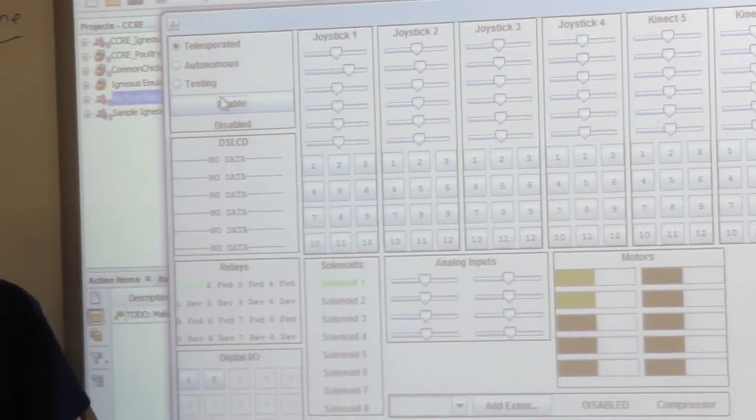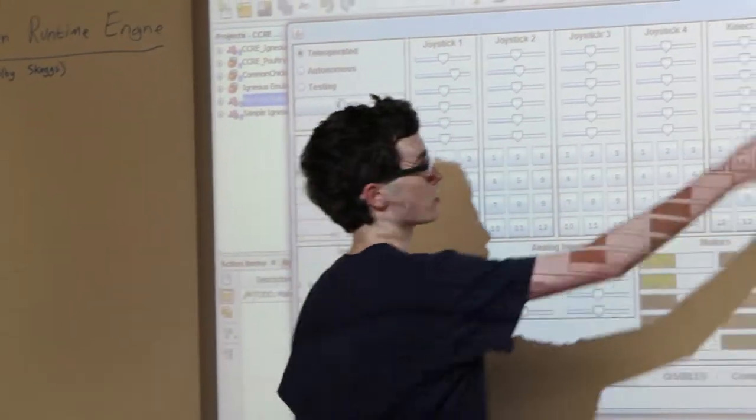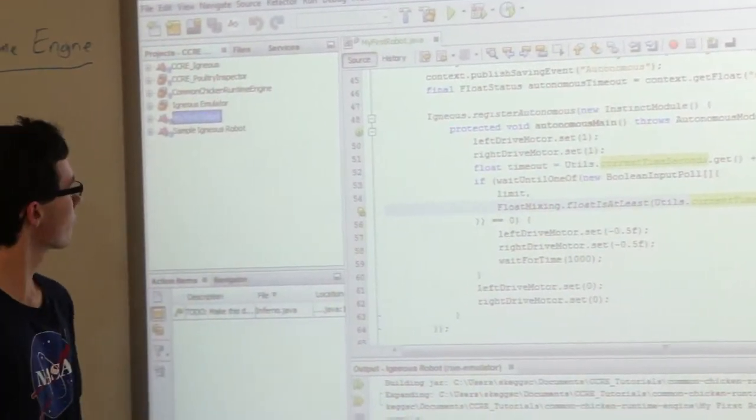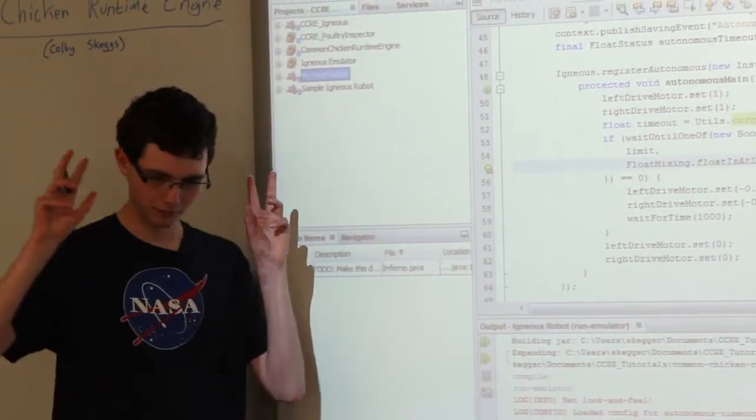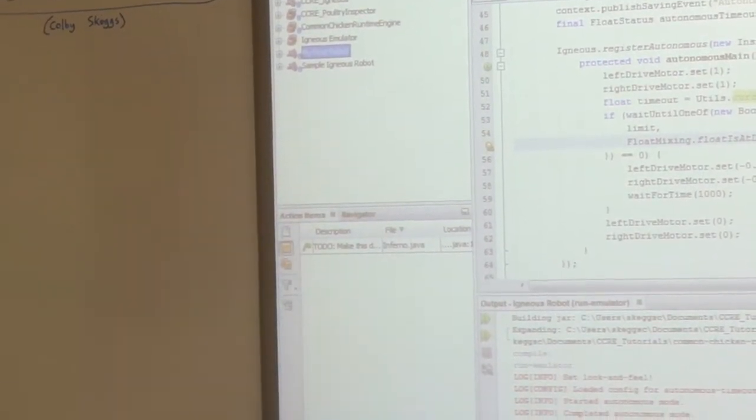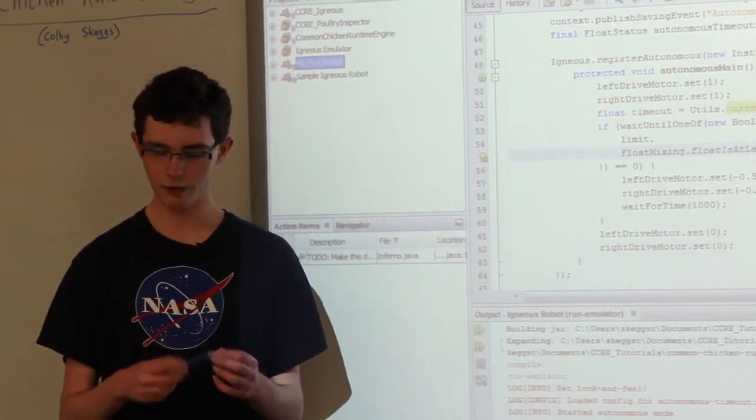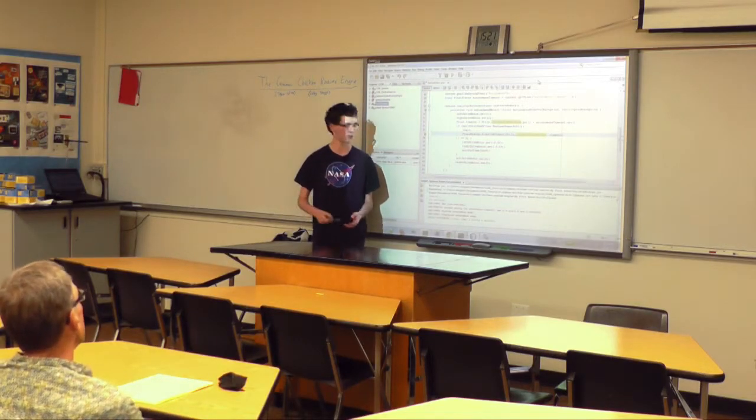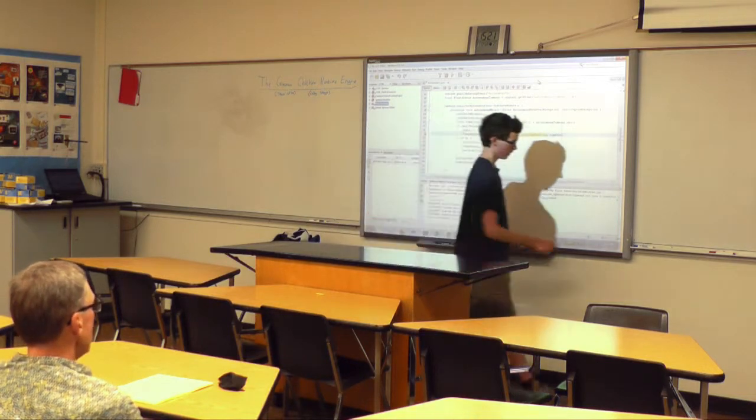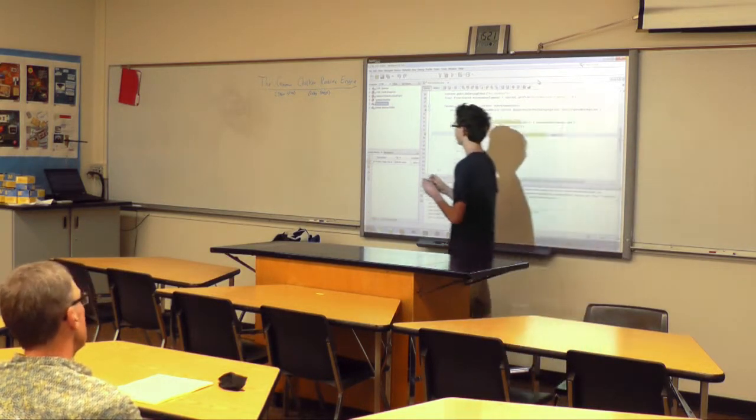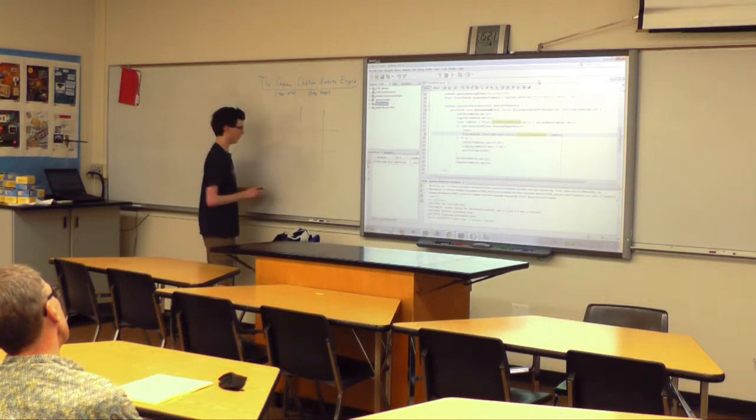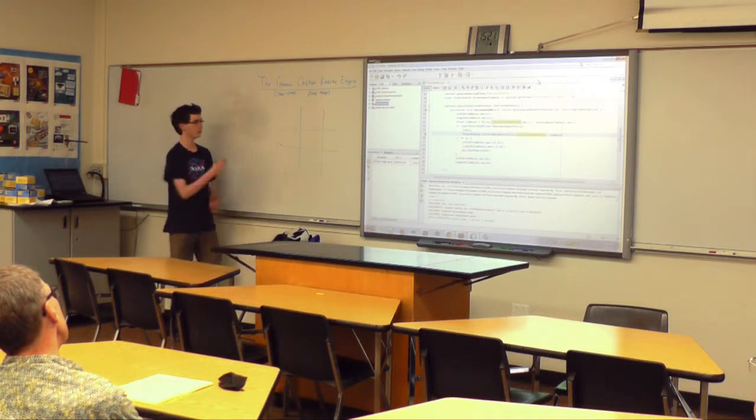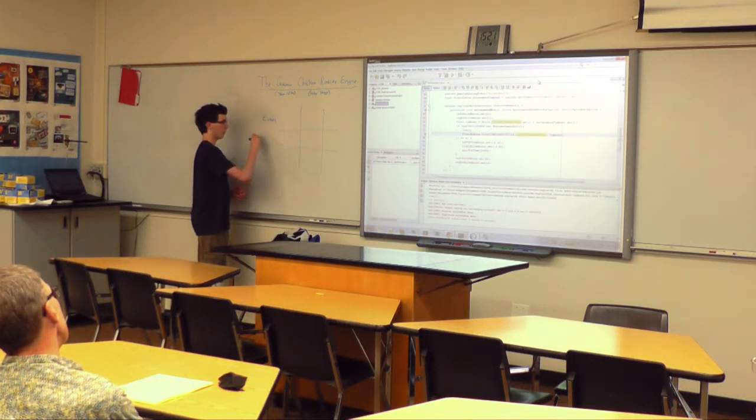This is made possible by all of the things the CCRE does in terms of abstractions. The main thing that the CCRE does is it gives you the fundamental set of abstractions for running a robot. These are effectively three different kinds of data or control data: Events, Booleans, and Floats.